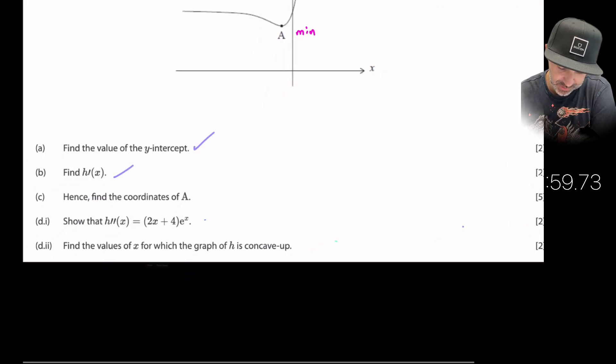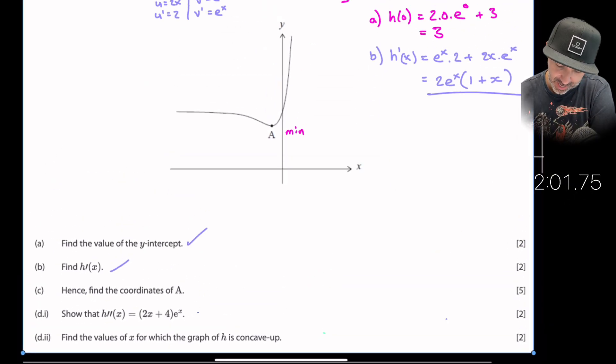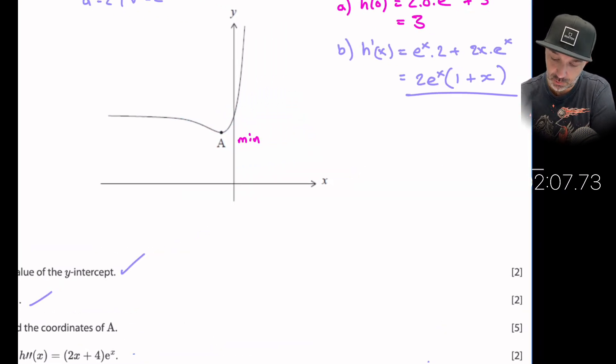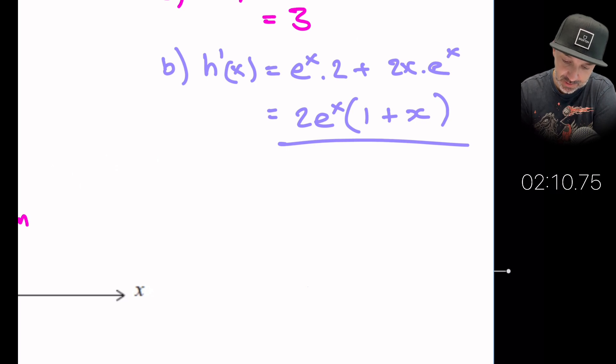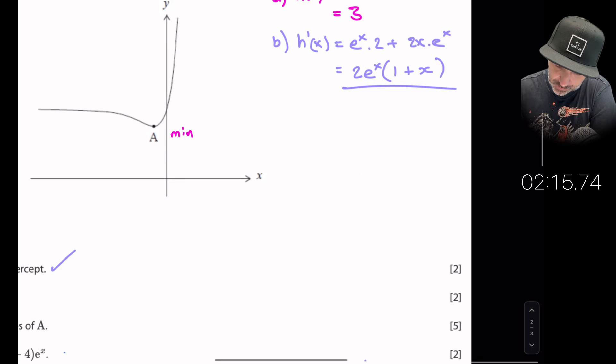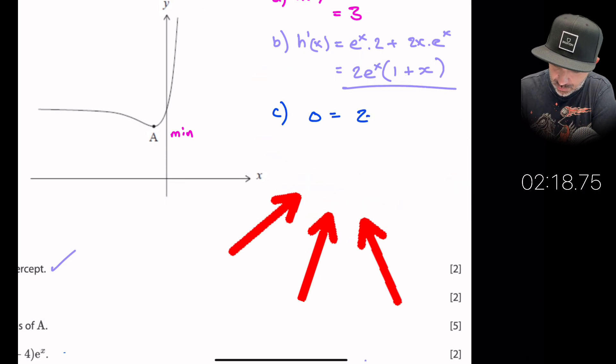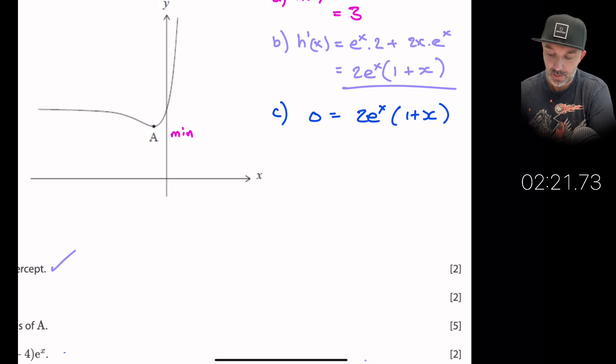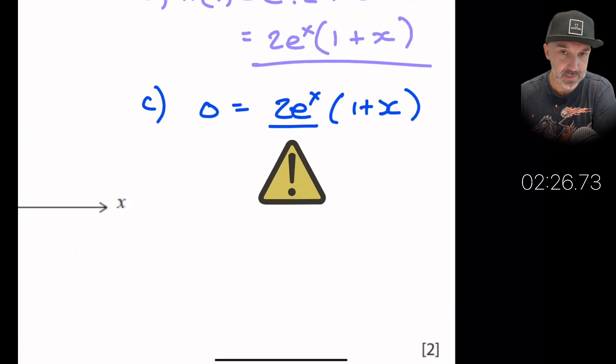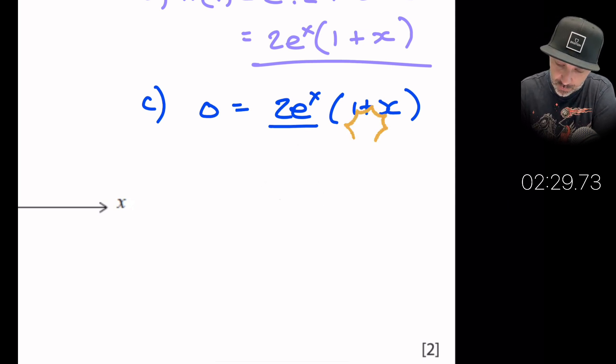All right, so the coordinate of A is a minimum. So therefore we know that the gradient at A is equal to zero. So I'm just going to go up to my expression that I just found here in part b and I'm going to equate this to zero. Okay so zero equals 2e^x(1 + x). Now the outside of the bracket can never equal zero. This can't equal zero because e to the power of anything cannot equal zero. So therefore then we're just focusing on this part of the expression. So when is 1 + x equal to zero? Well that would be when x is equal to minus one.